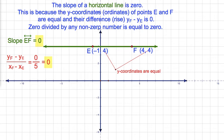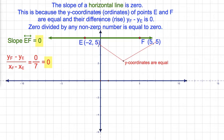The slope of a horizontal line is 0. This is because the y-coordinates of points E and F are equal and their difference, rise, is equal to 0. Zero divided by any non-zero number is equal to 0.